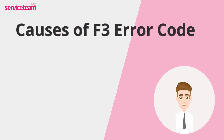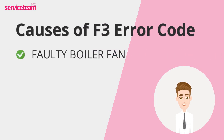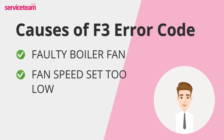Let's see what causes the F3 Ideal error code. A faulty boiler fan can directly cause the F3 fault code — wear and tear over time can lead to fan failure, making replacement necessary. When the boiler's fan speed is too low, it won't effectively push out these gases, triggering the Ideal F3 fault. This can happen if the fan wasn't adjusted properly during installation, or if the fan components have worn down over time.